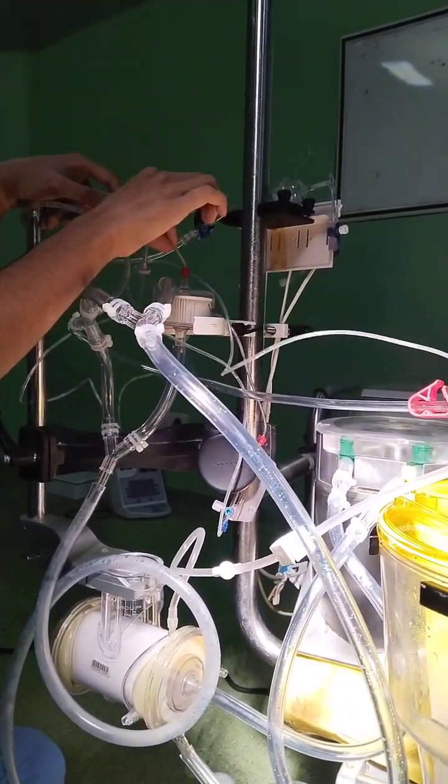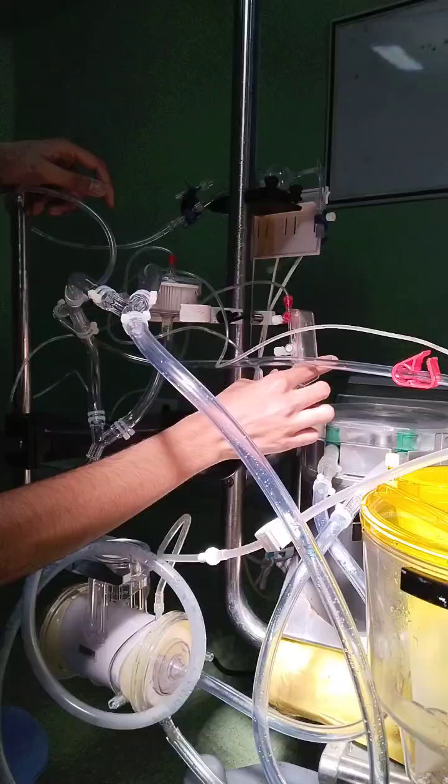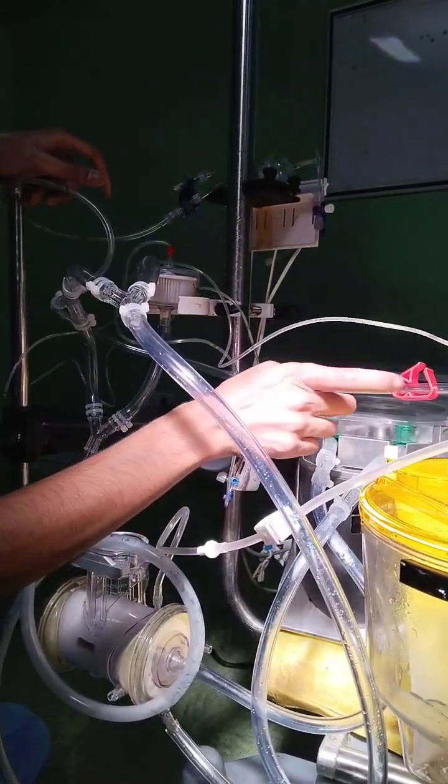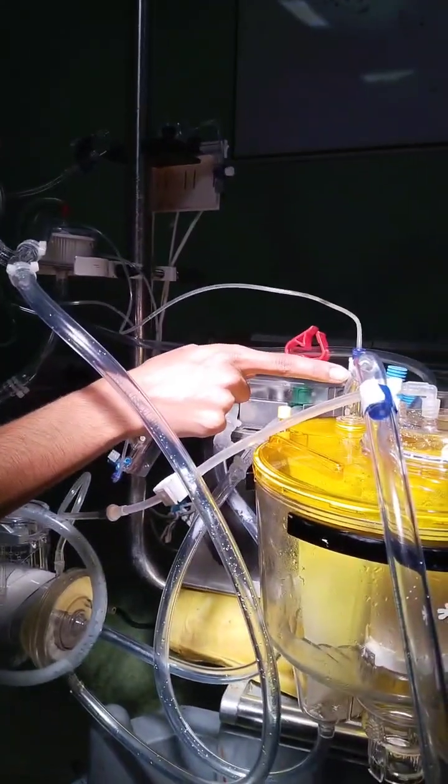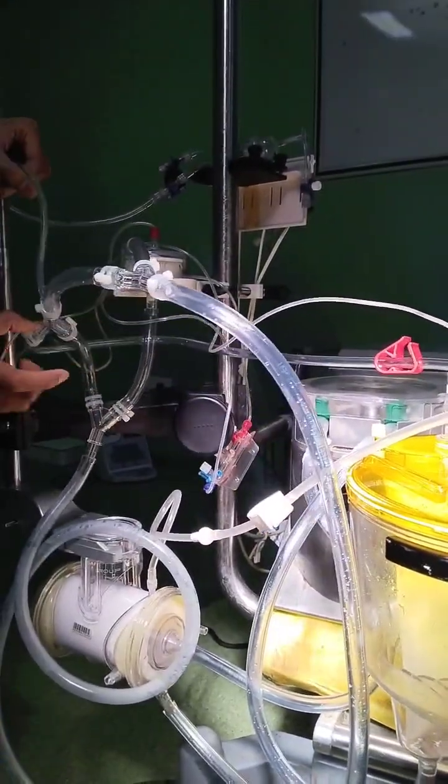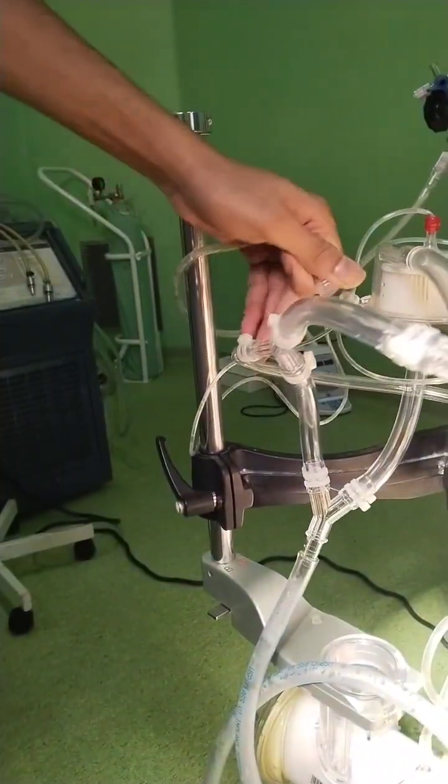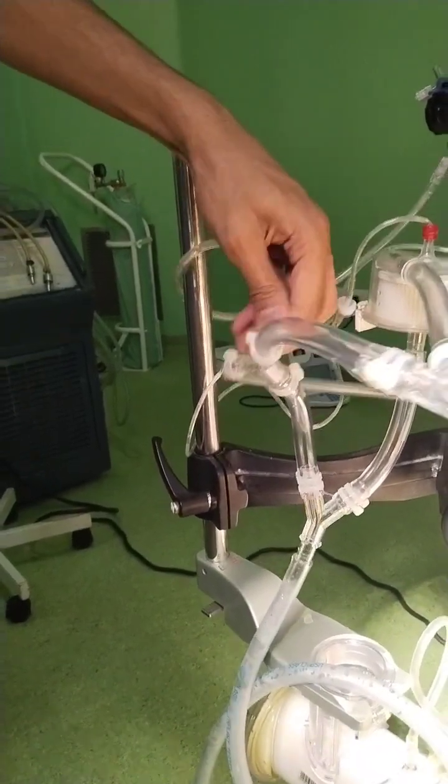You can see the other end, the venous end of the manifold, will be connected to the venous reservoir inlet. The isolator will be connected to this 38-38-38 and one-fourth connection. The isolator will be connected to this port.